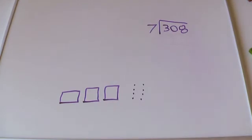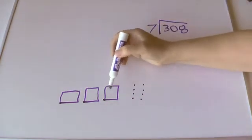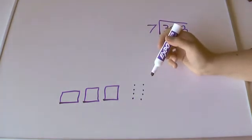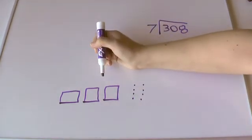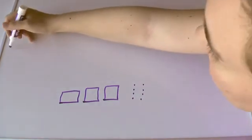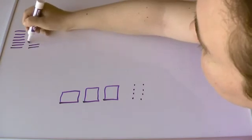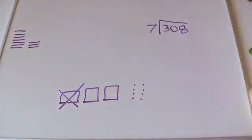All right. Last one for this video. 308 divided by 7. How many 7s are in 308? Or, if I make a rectangle out of 308 and 7 is one side, what's the other side? So, I have 308 represented down here. And I want 7 on one side. So, I'm going to take this 100 and go 1, 2, 3, 4, 5, 6, 7, 8, 9, 10. Use that up.